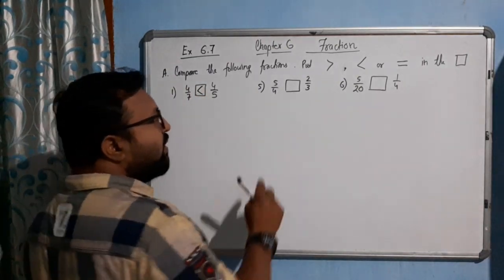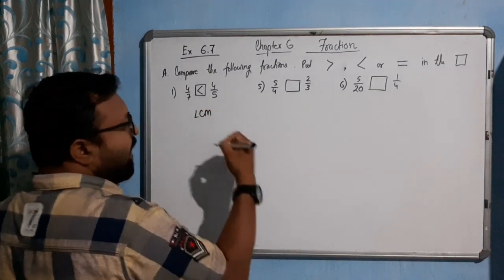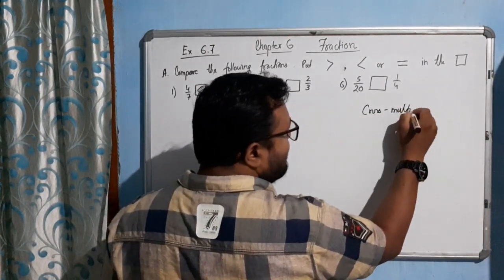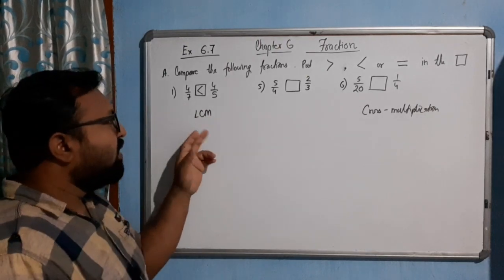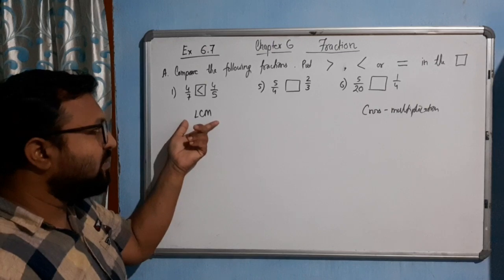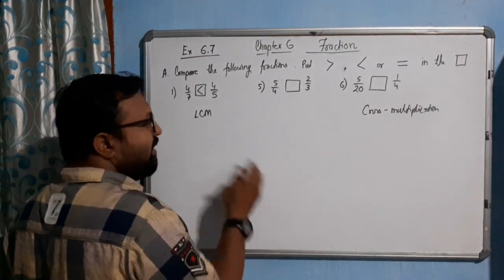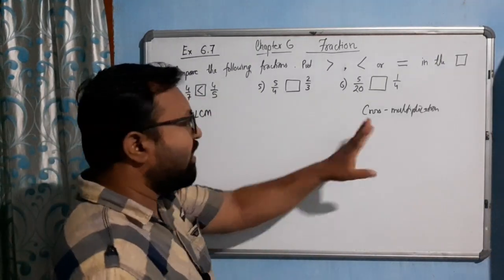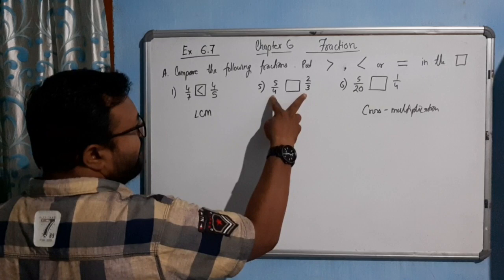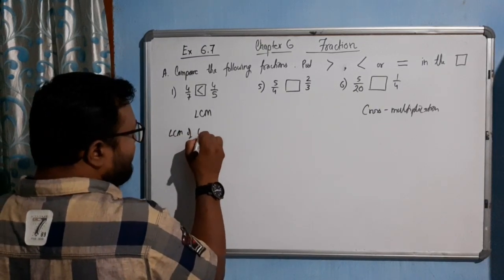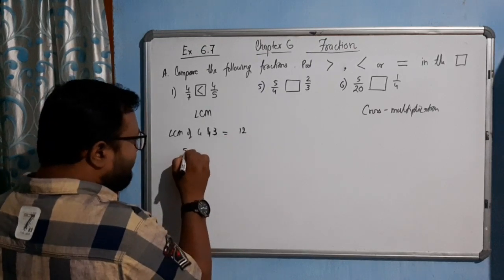When neither the numerator nor the denominator are the same, there are two methods: by LCM and by cross multiplication. The LCM method is useful both for comparing two fractions and for arranging many fractions in ascending or descending order. Cross multiplication, however, can only be used for comparing two fractions. Now, the LCM of 4 and 3 — since one is even and one is odd — is 12.